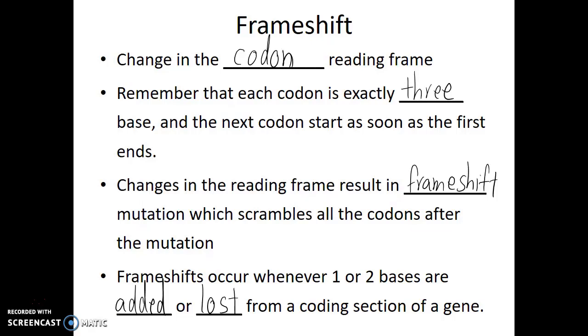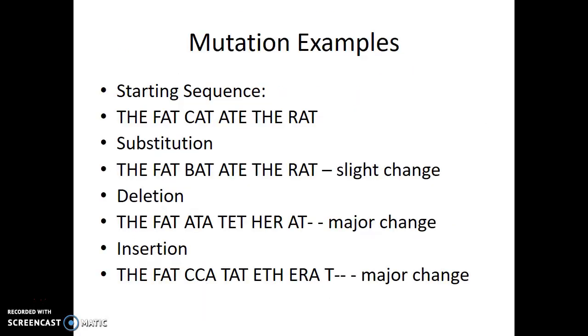Here we'll look at a few examples of how these types of mutations would end up impacting the message of that mRNA. If we use the English language as an example, but we set the same codon rules where each word is exactly three letters long and as soon as the first word ends, the next three letters make up the next word, we have our starting sentence: The fat cat ate the rat. So in this case the sentence has meaning, it follows the rules where all of the words are three letter words.